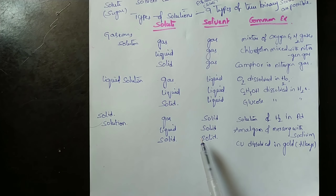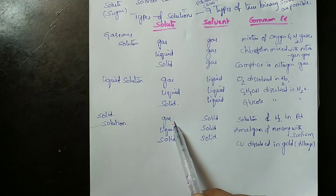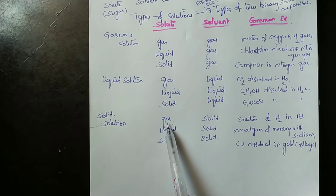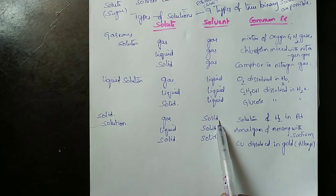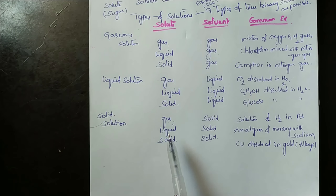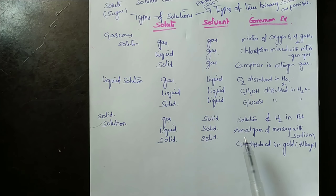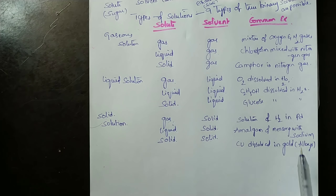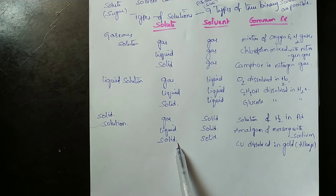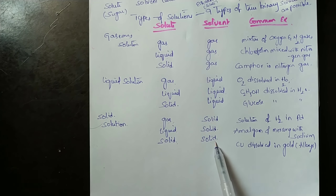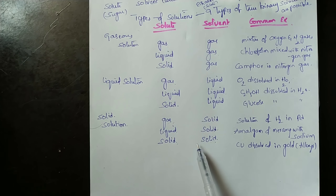In a solid solution, when the solvent is solid and solute is gas, an example is hydrogen gas in palladium solid. When the solute is liquid and solvent is solid, an example is an amalgam of mercury with sodium. When both solute and solvent are solid, an example is copper dissolved in gold, which forms alloys.